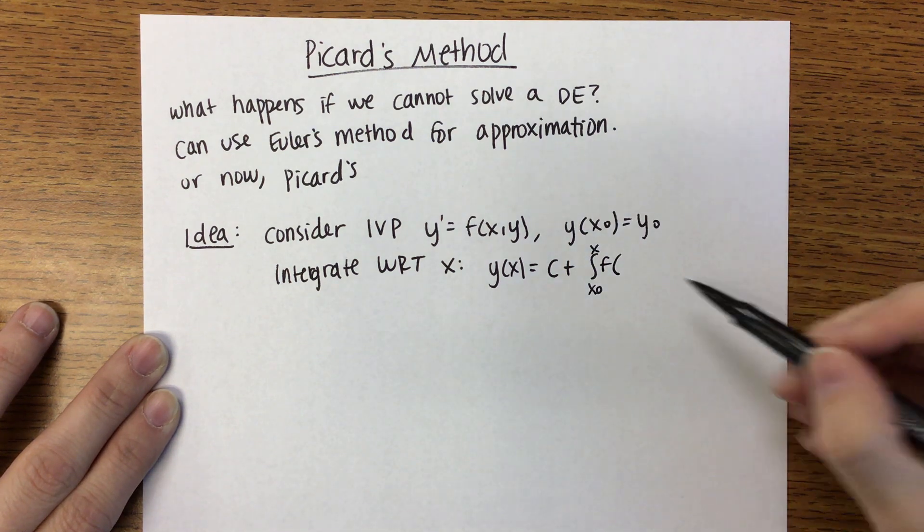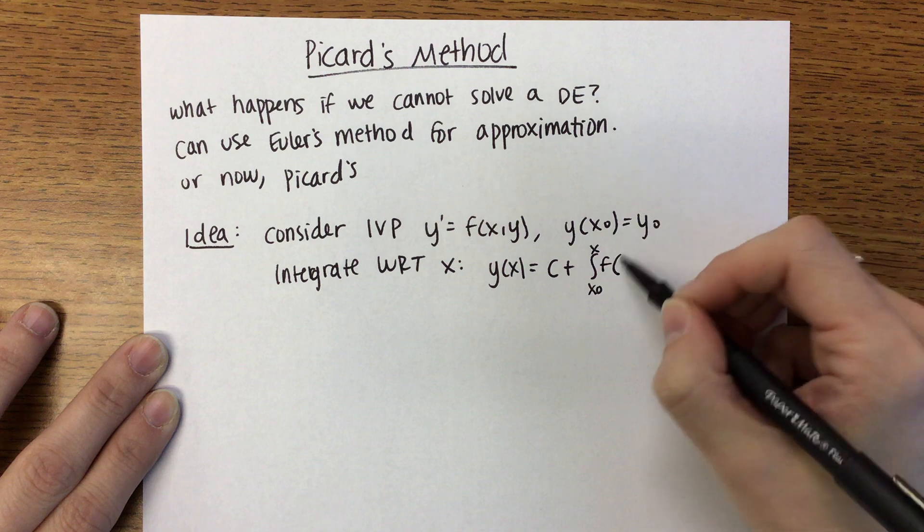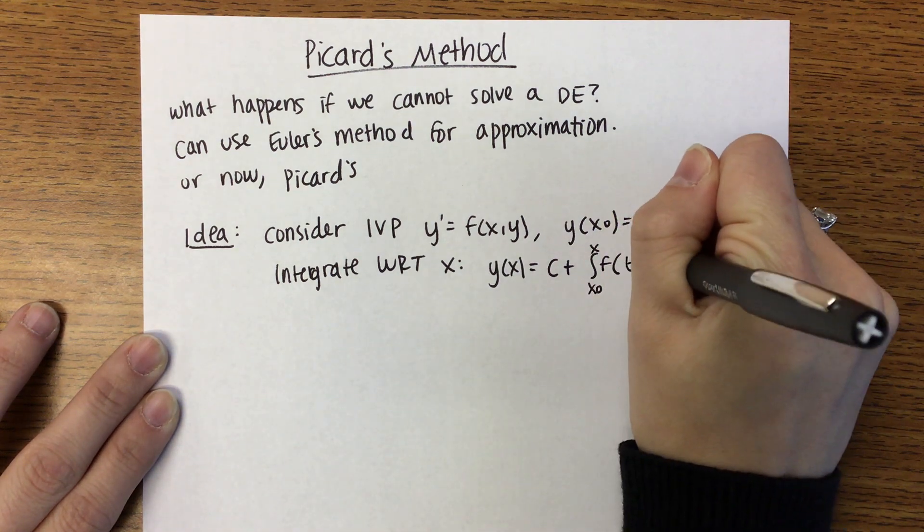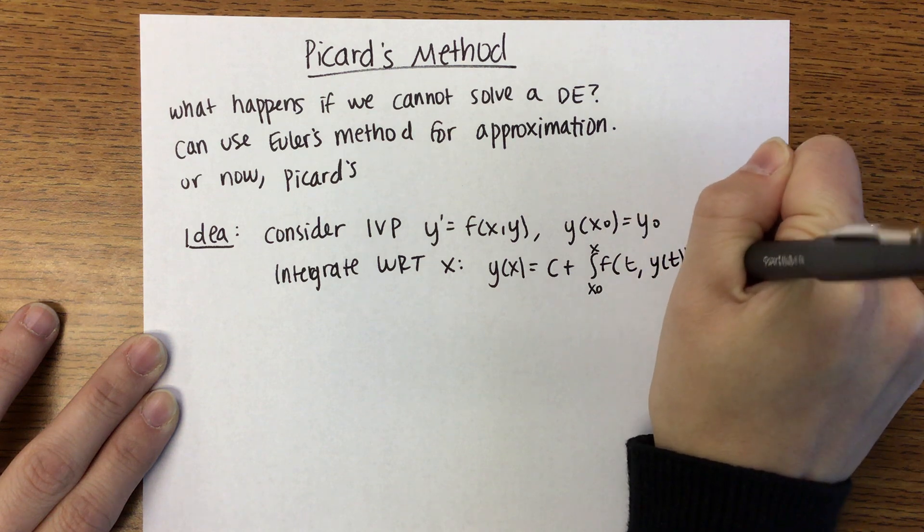We've talked about this before, if X is within our limits, X can't be in the function. So instead of X, you'll use T. So it'll be T and then Y of T, DT.